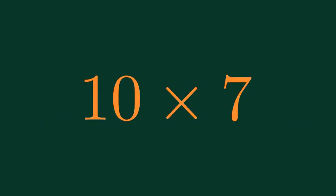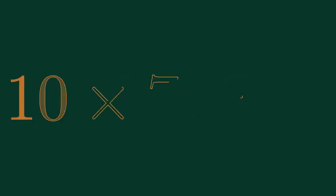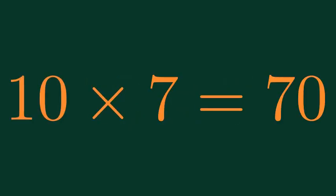What is 10 times 7? 10 times 7 is equal to 70.